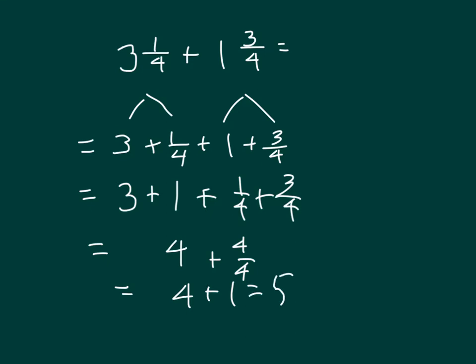Looking at our numbers: one fourth and three fourths is four fourths. Then we add our whole numbers — three plus one equals four. So we can rewrite four and four fourths as five.